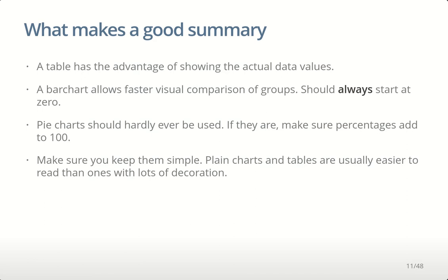What makes a good summary for categorical data typically depends on your purpose. If you only have a few important numbers to show, a table is usually best because it shows the actual numbers. A bar chart is usually faster for visual comparison, and it should always start at zero because you're comparing length — the length must be proportional to the value. My advice is to not use pie charts, but if you do, make sure the percentages add up to 100. Keep your charts simple without decoration that distracts.